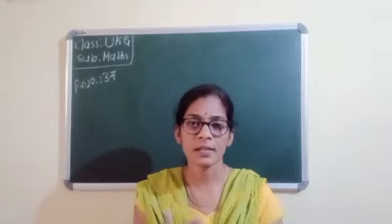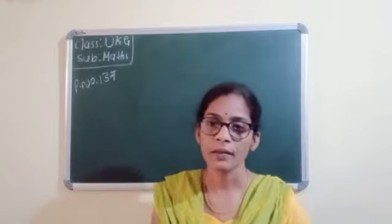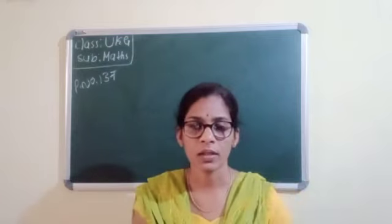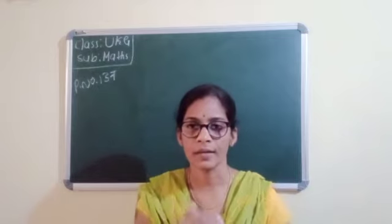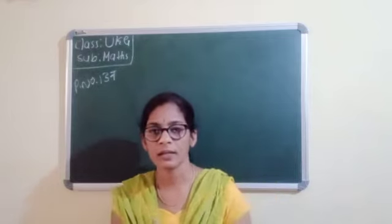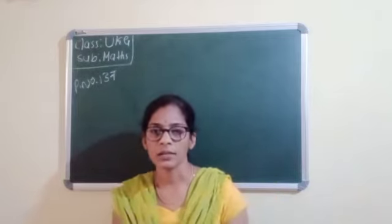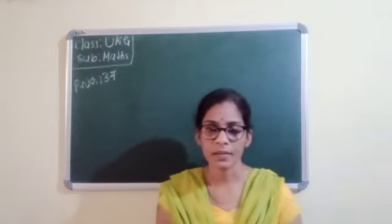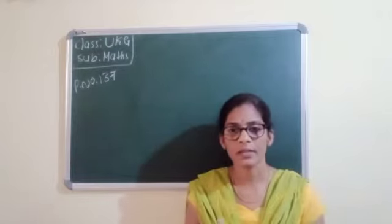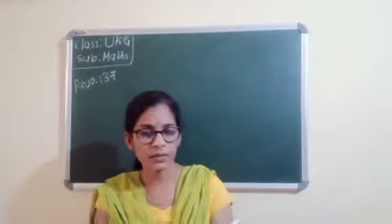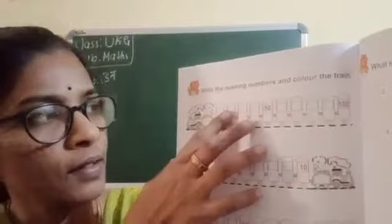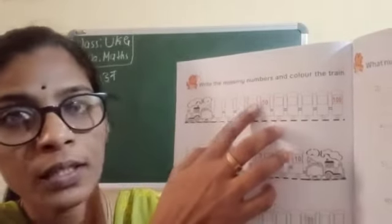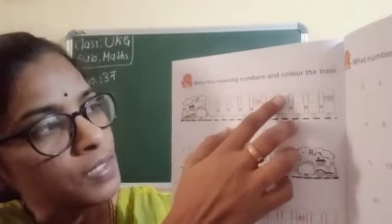10 skip — counting by 10s: 10, 20, 30, 40, 50, 60, 70, 80, 90, 100. They will give here 10 skip. Again: 10, 20, 30, 40, 50, 60, 70, 80, 90, 100.